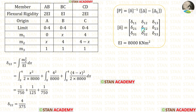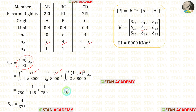Now let us find δ₂₂. The formula is ∫M2²/EI dx. Applying the values of M2 and integrating over the three segments gives three values which are added together to obtain δ₂₂.